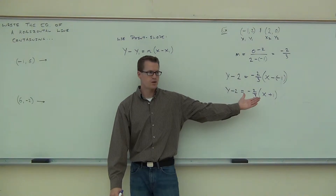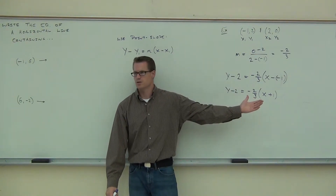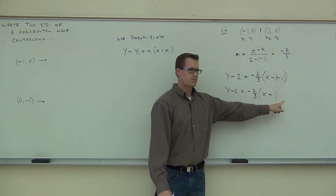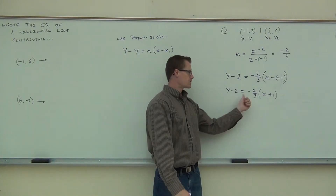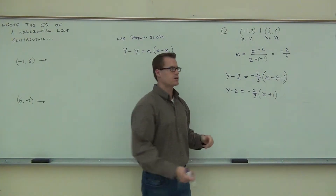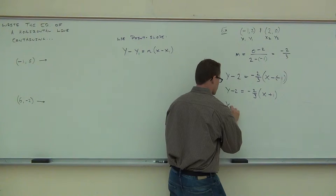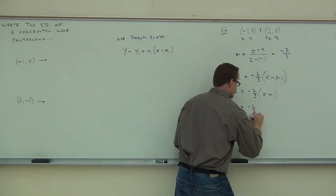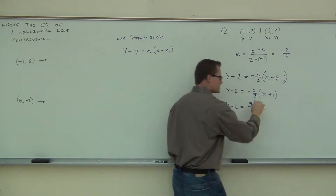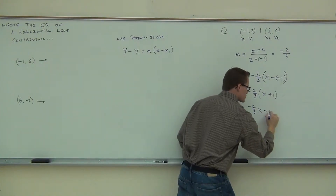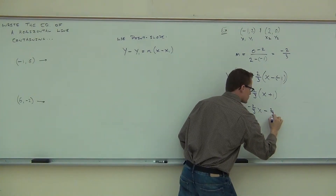If you're supposed to write this in slope-intercept form, you have some more work to do. Specifically, you need to distribute, and then you're going to have to add 2, like we were talking about at the beginning of this example. So negative 2 thirds times x, and negative 2 thirds times 1 is just minus 2 thirds.